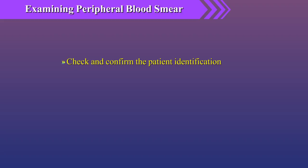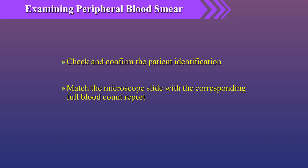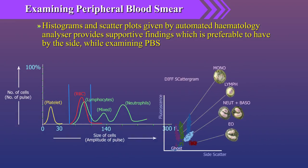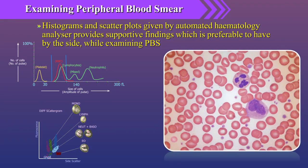First, check and confirm the patient identification and match the microscope slide with the corresponding full blood count report. It is important to note the age, sex, and history of the patient since the blood film cannot be interpreted without this information. Histograms and scatter plots given by automated hematology analyzers provide supportive findings, which is preferable to have by the side while examining the peripheral blood smear.